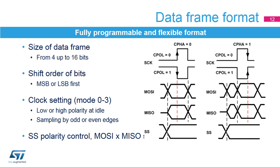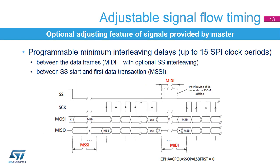The slave select signal can be used with both polarities and the functionality of the MOSI and MISO signals can be swapped. Several parameters can be used to optionally adjust the timing of the master transaction flow. Signal timings for the master node can be adjusted when needed — for example, when a slave node needs a longer time to wake up from sleep mode following the setup of the SS active edge, or when the slave is not able to handle a data flow that is too fast. Up to 15 additional serial clock signal period delays can be inserted by MIDI or MISI parameters. Data frames can be optionally interleaved by SS pulses.